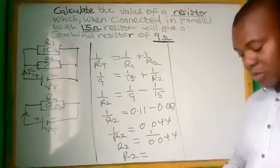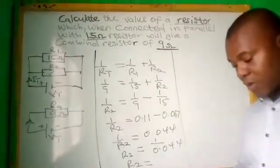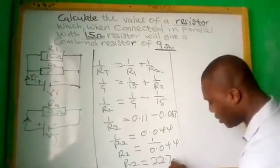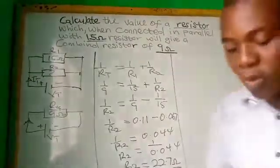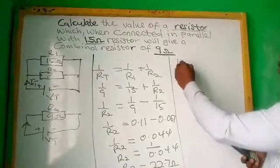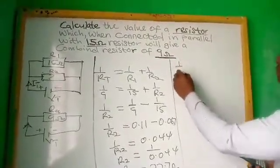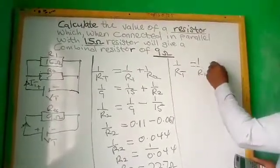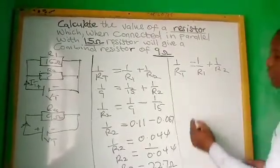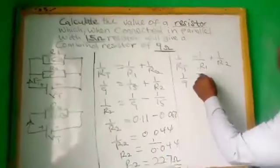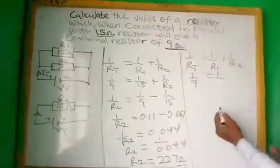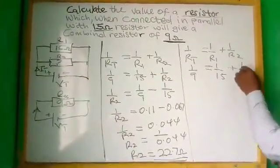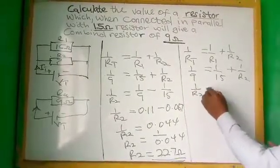Now let's try to use the least common multiple formula. What you do is bring 1/RT which is 1/9 is equal to 1/15 plus 1/R2. So you bring 1/R2 to the other side, which is equal to 1/9 minus 1/15.